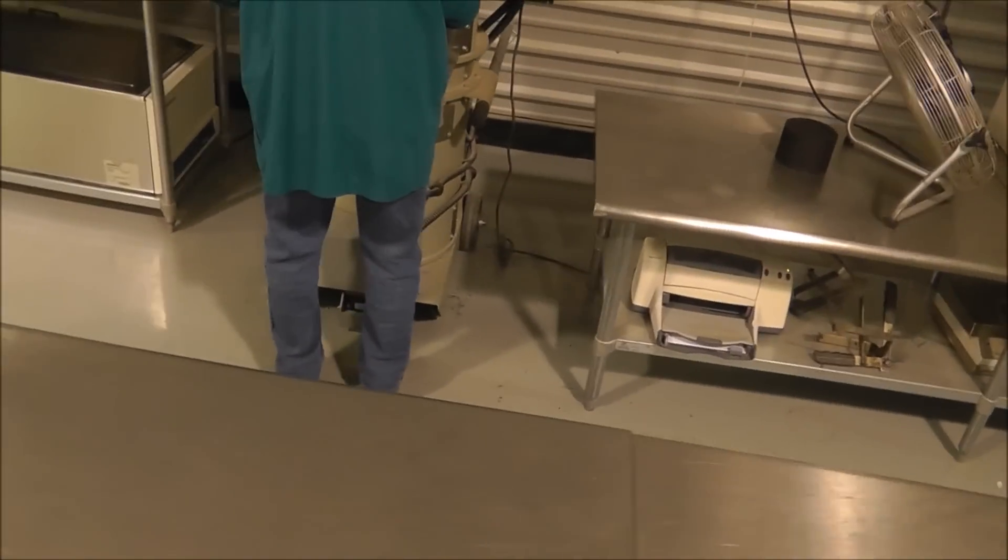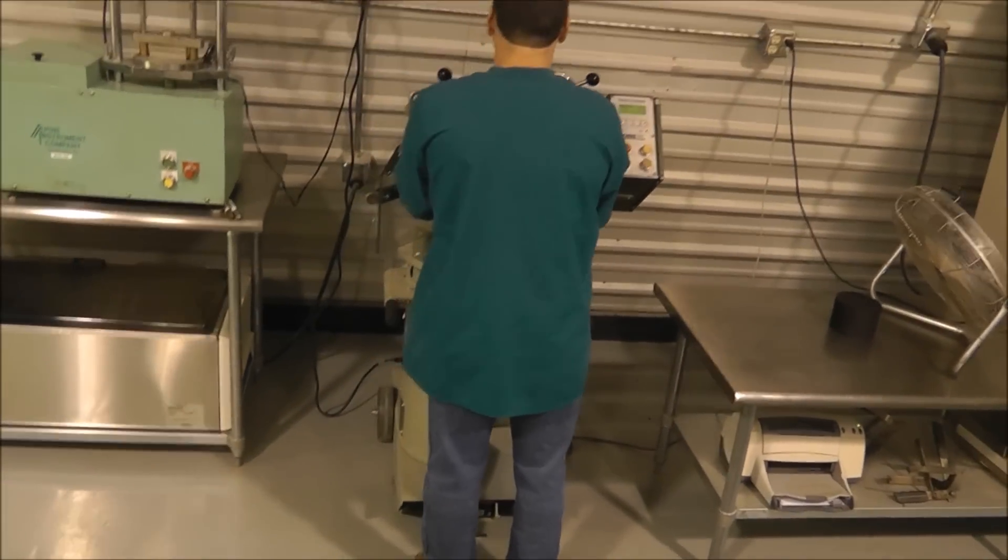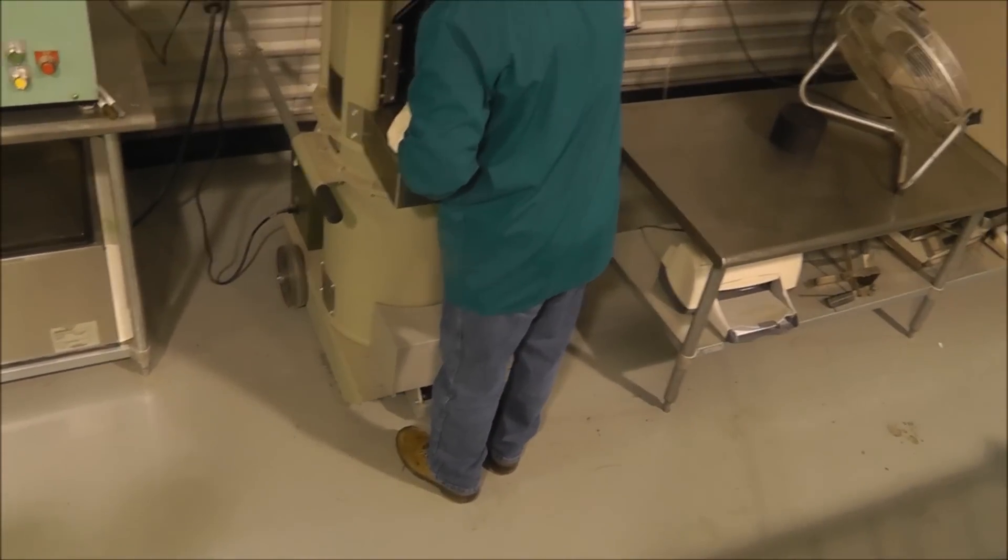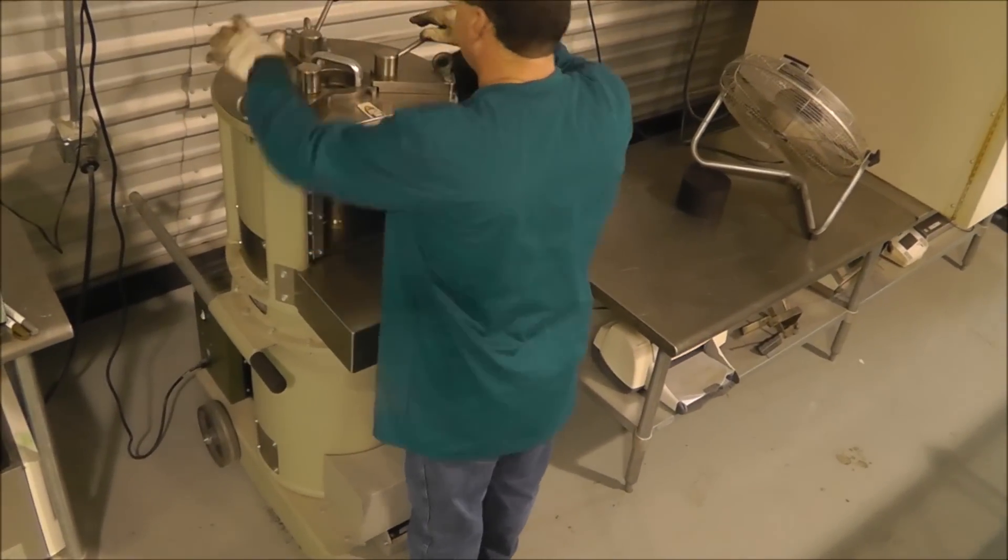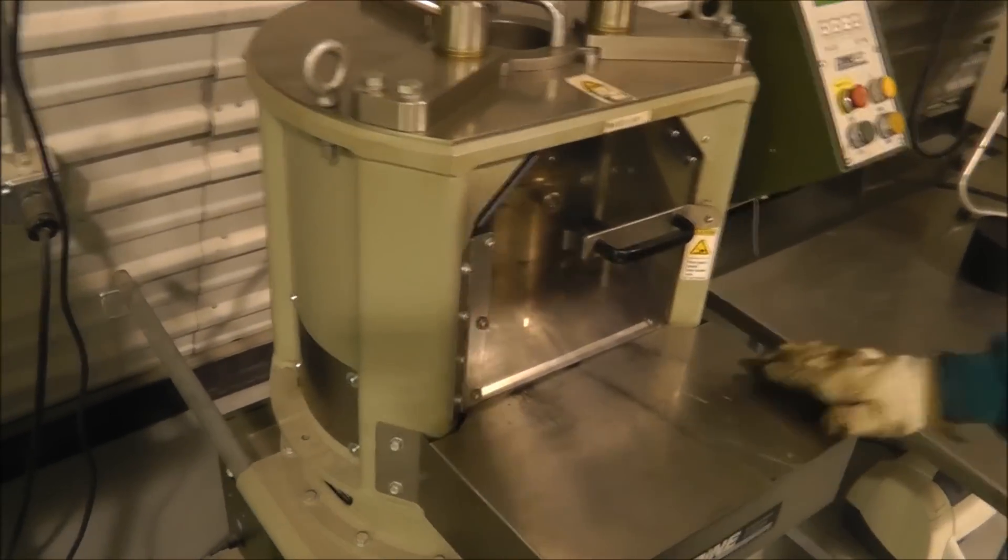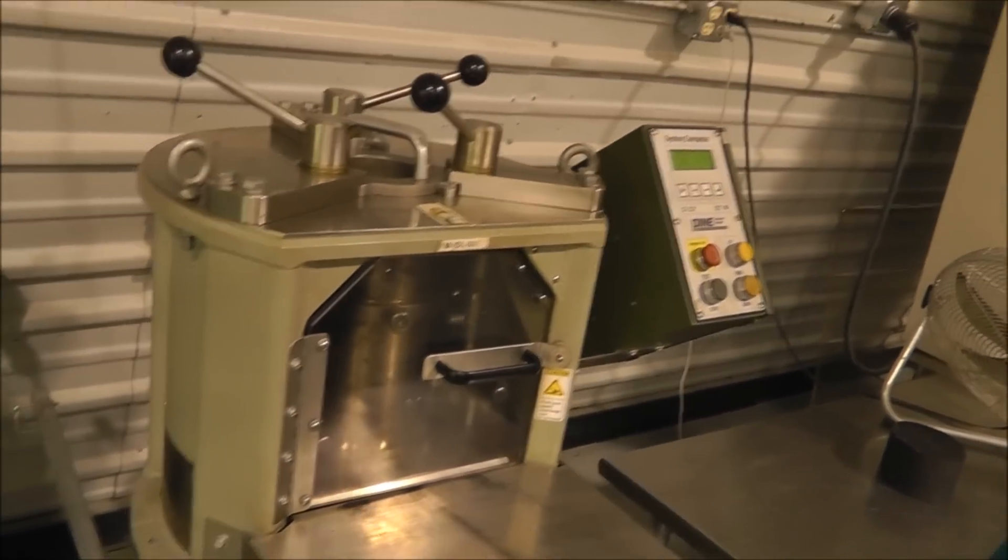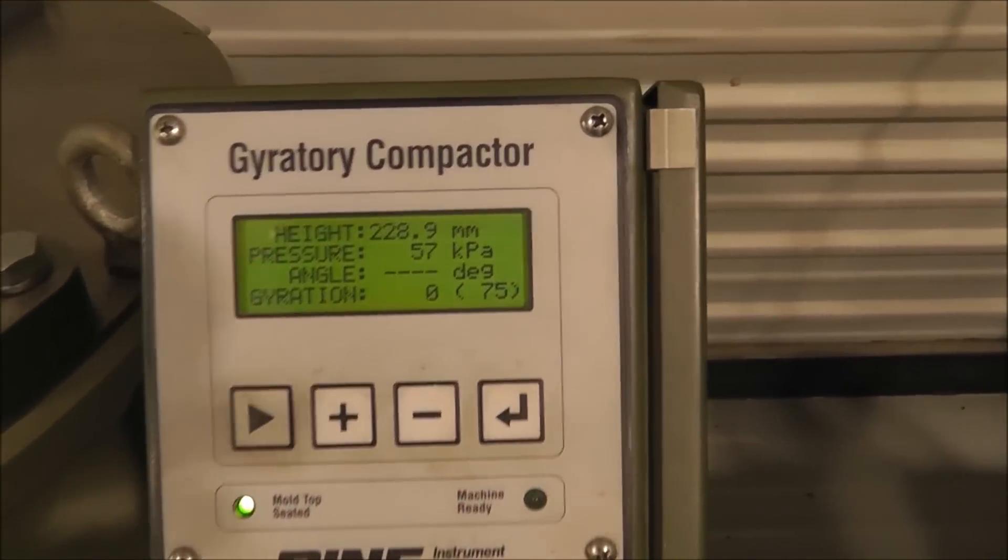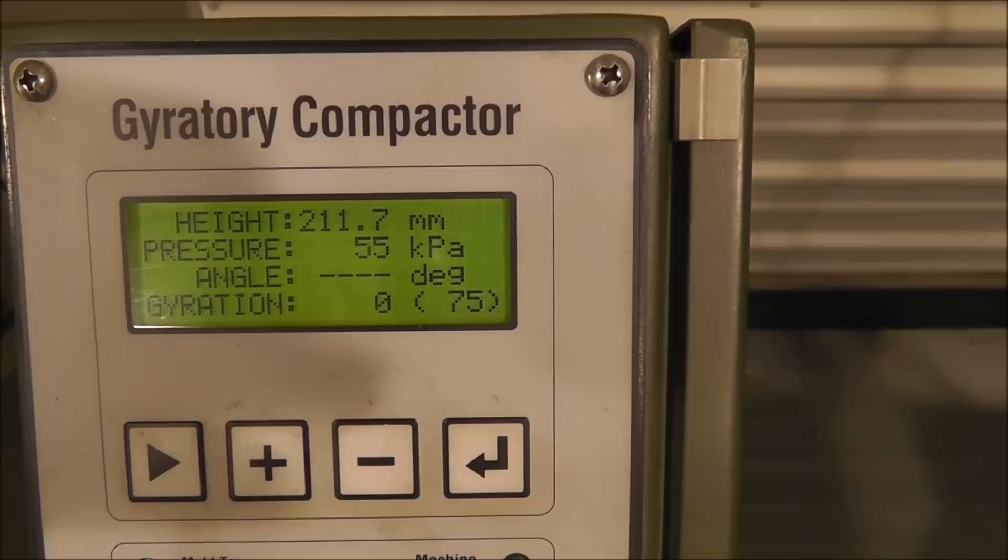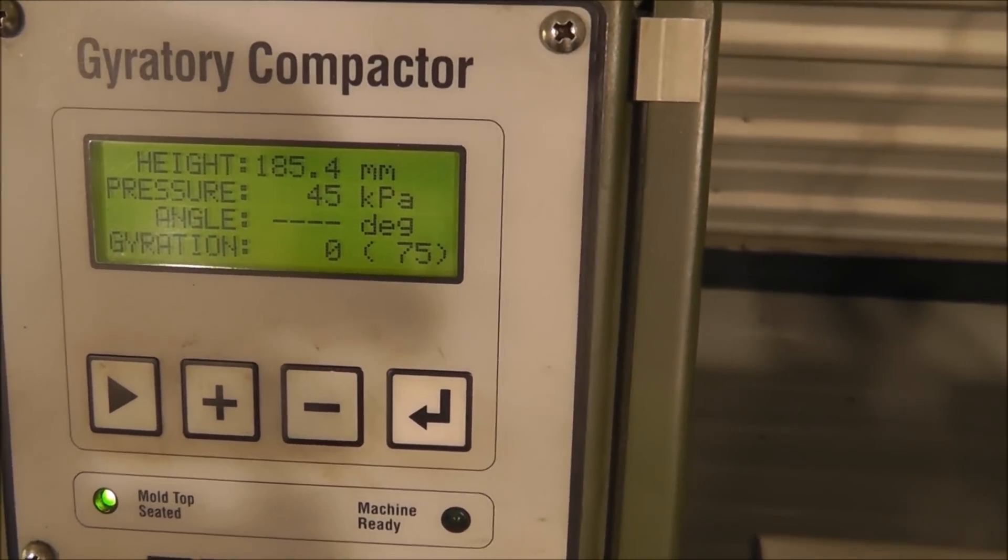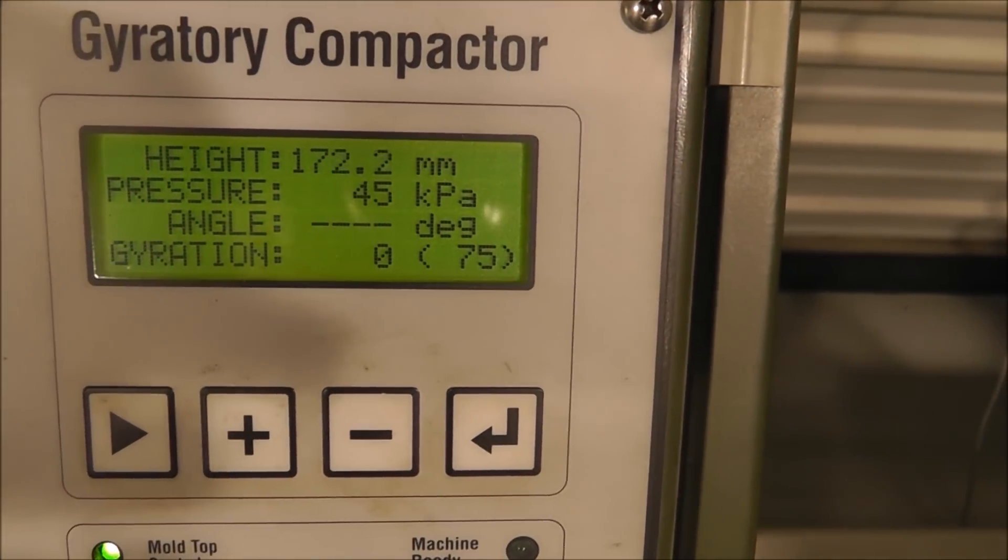Place the top filter on, now he's going to the gyratory compactor, he's locking the specimen and mold into the compactor, it's now locked in and he's now starting the compactor through this process. How many gyrations is this? 75. 75 gyration mix. You can see the display there on the compactor, it will display the pressure and the angle, it's going to induce an angle pretty soon, it will also display the height.